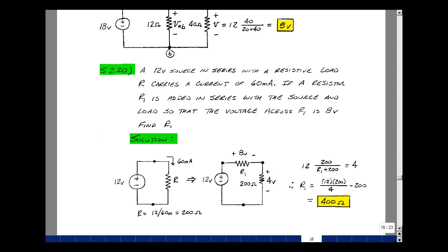We can use the voltage divider rule to solve for R1. The voltage equation is: 4 volts equals 12 volts times 200 over R1 plus 200. I set it up this way so that R1 appears only once in the equation and can be solved in one step.